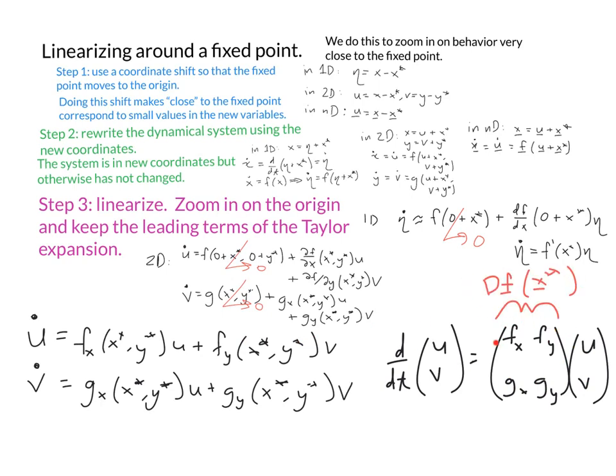In general, this object is referred to as the Jacobian, and is sometimes denoted capital D of the vector f, where the vector f incorporates all of our equations evaluated at the fixed point.